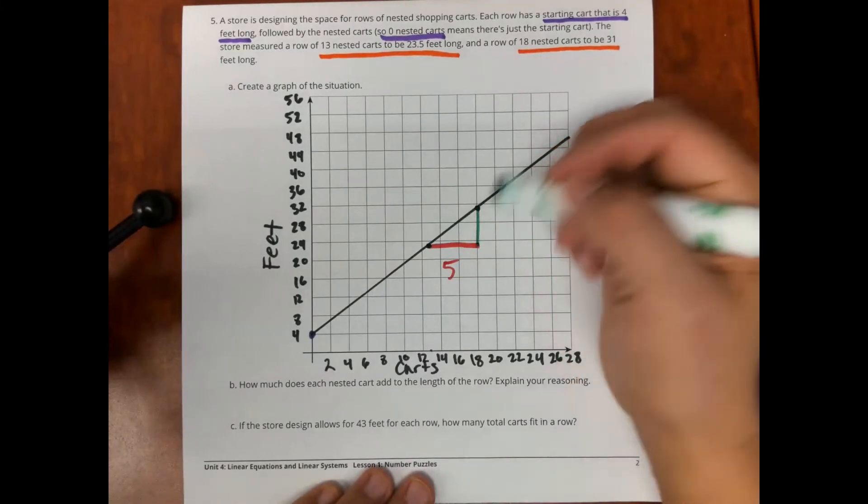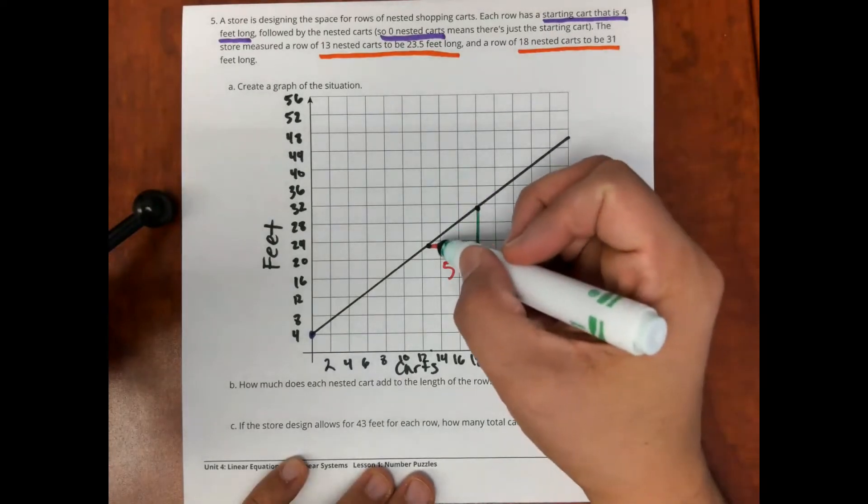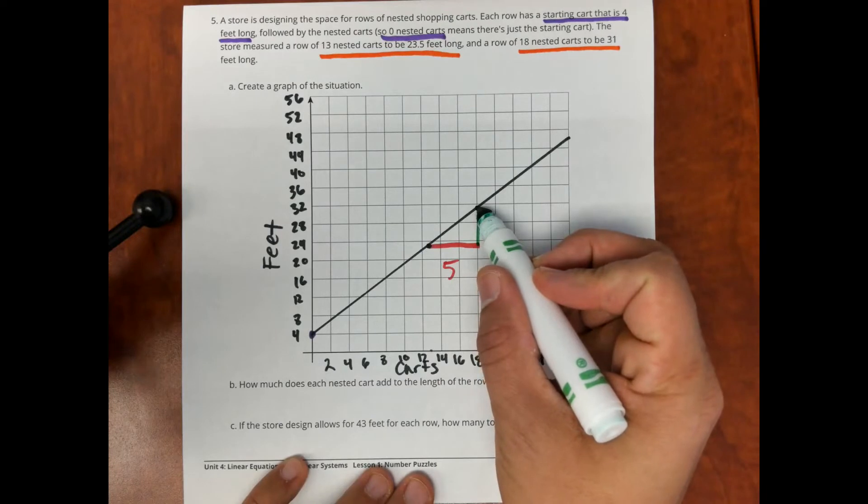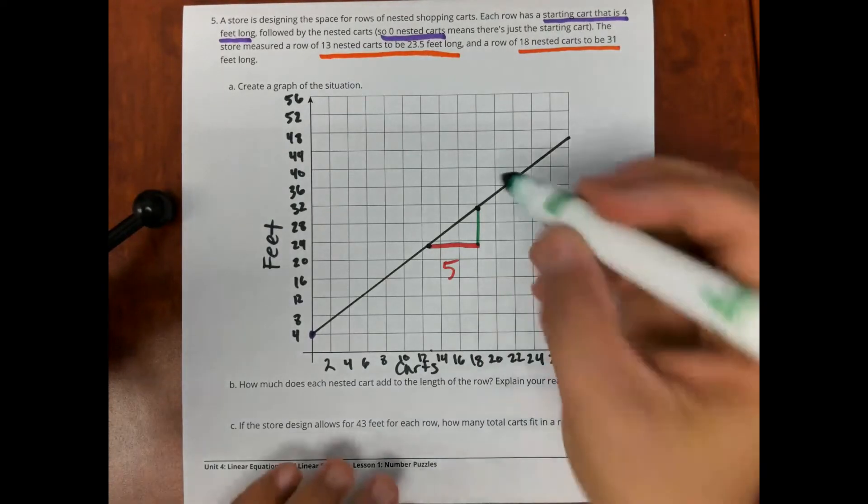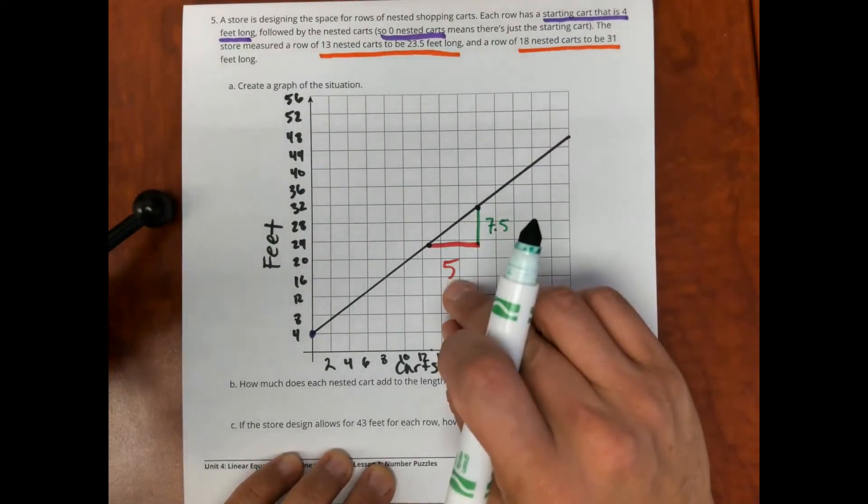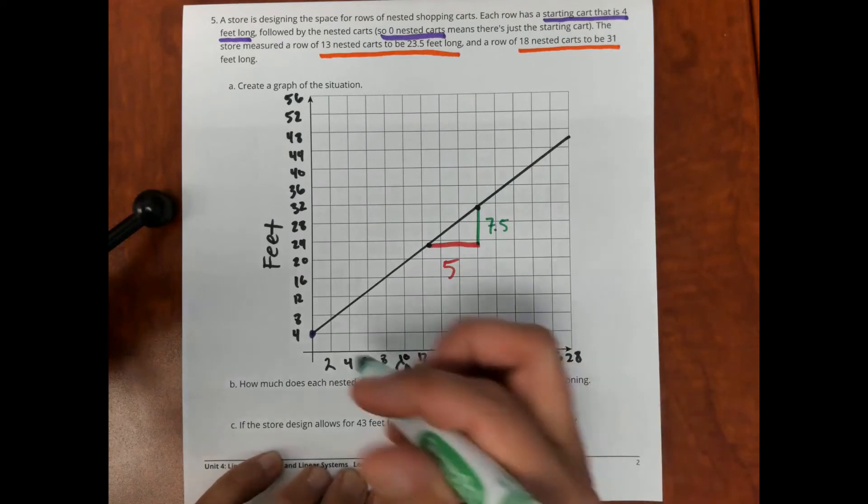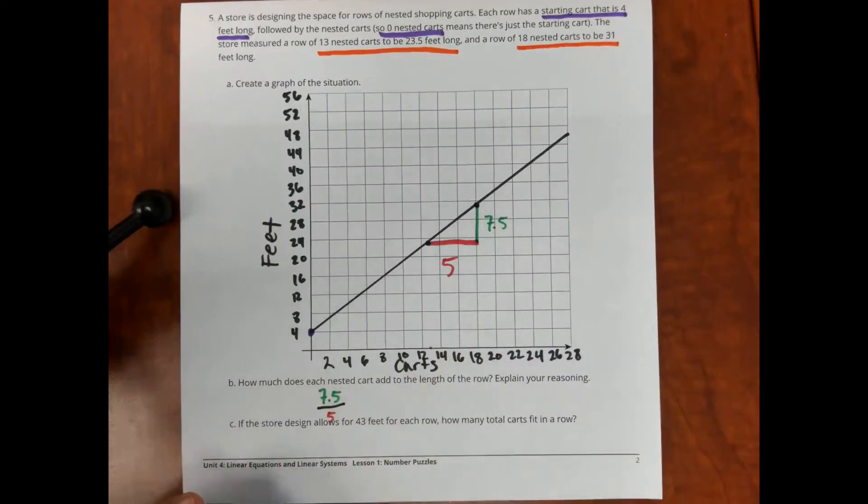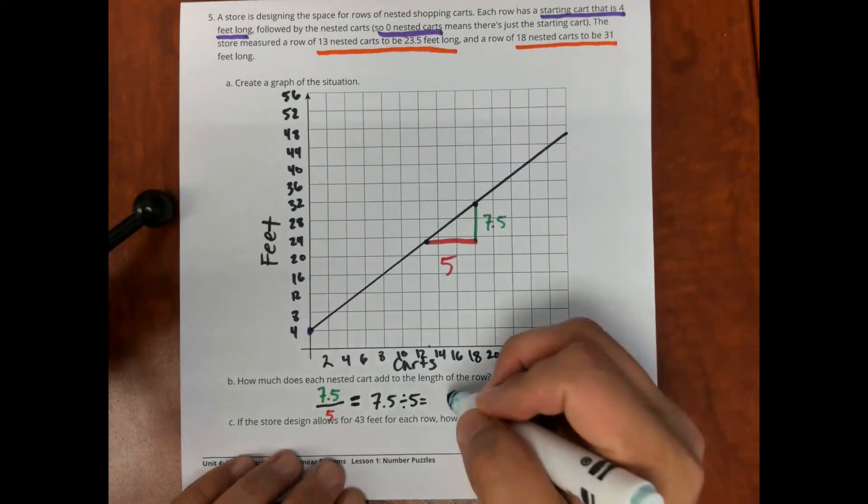Now, the other side here in the triangle, which is right here, this is the number of feet that it changes. What is this change of feet? Well, I know that it's from 23 and a half, that's where this point is right here, all the way up to 31 feet. So, that's going to be 31 minus 23 and a half, which is seven and a half feet. So, now with this slope triangle, I have five carts at seven and a half feet. So, to answer here, I'm going to write out that ratio, seven and a half feet and five carts. And now what I want to do is find out what it is for one cart. So, I'm going to divide, which is one and a half feet per cart.